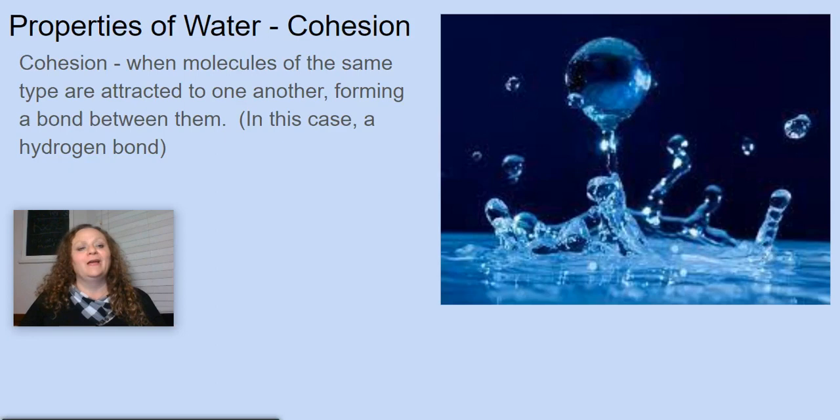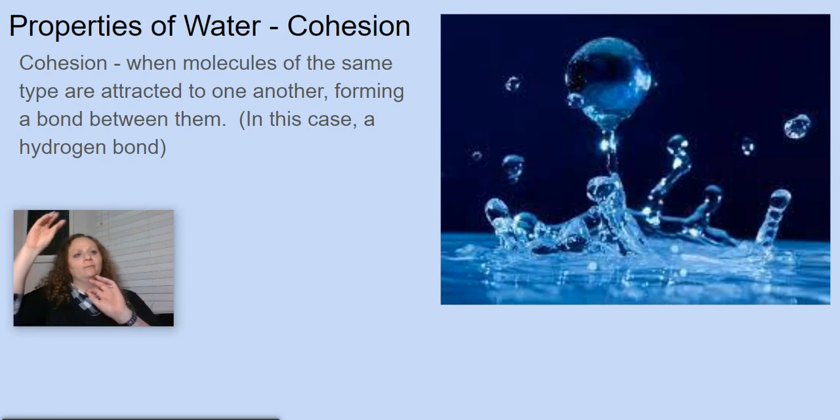Cohesion occurs when molecules of the same type are attracted to one another, forming a bond. In this case, the bond we're going to talk about are these hydrogen bonds that form between water molecules. This is why water droplets are spherical. This is why they attach to one another. This is why they collect together. Have you ever watched rain coming down a window and how the water droplets all sort of form together and make larger drops that sort of streak down? This is all cohesion.